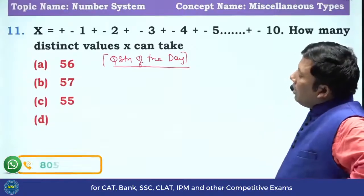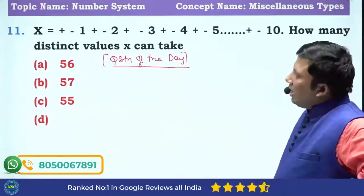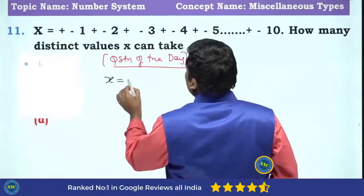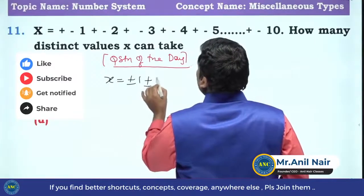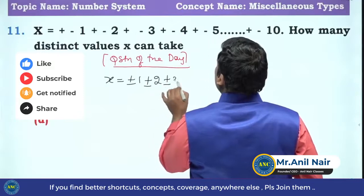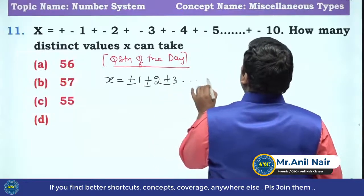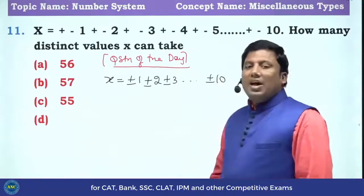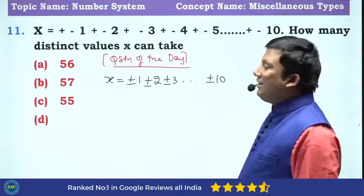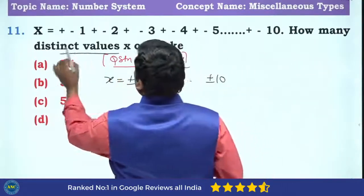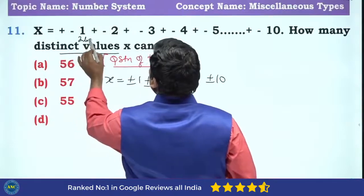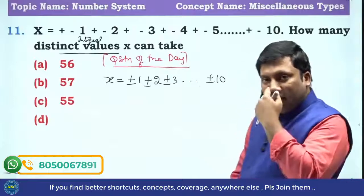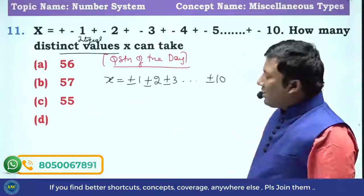X is equivalent to plus or minus 1, plus or minus 2, plus or minus 3, and so on up to plus or minus 10. How many distinct integral values can X take? All are integers, so obviously the output will also be an integer.